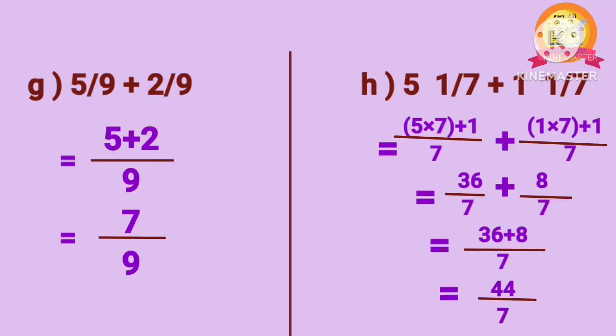Problem G: 5 by 9 plus 2 by 9. As the denominators of both fractions are the same, after adding, we get 7 by 9.